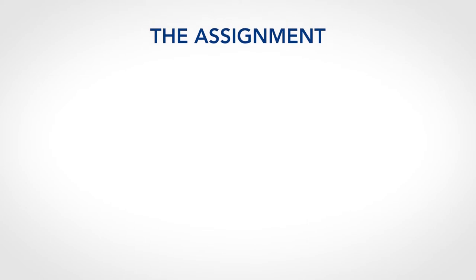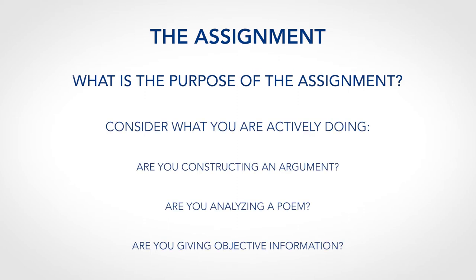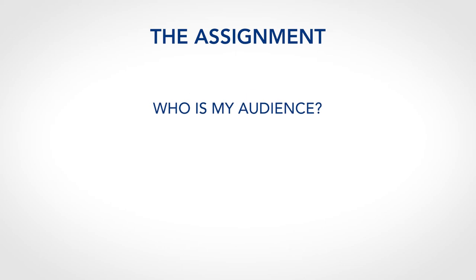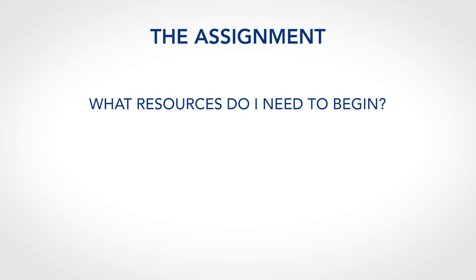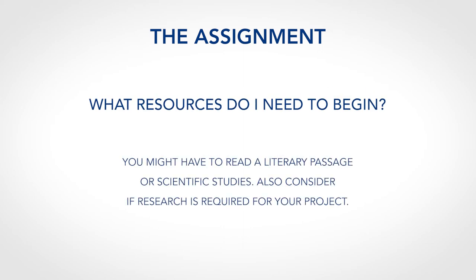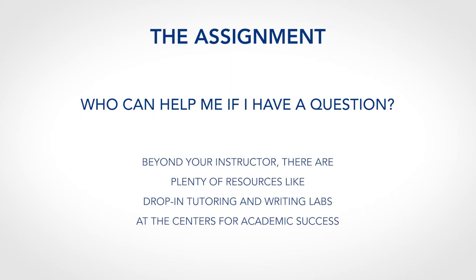After you read the assignment and get a clear understanding of what you will need to do, ask yourself the following: What is the purpose of this assignment? Consider what you are actively doing — are you constructing an argument, analyzing a poem, or giving objective information? Who is my audience? Think about who else might read the assignment, aside from your instructor. What resources do I need to begin? You might have to read a literary passage or scientific studies, and consider if research is required. Who can help me if I have a question? Beyond your instructor, there are plenty of resources like drop-in tutoring and writing labs at the Centers for Academic Success.